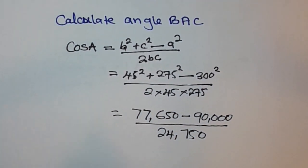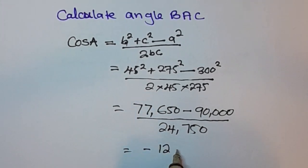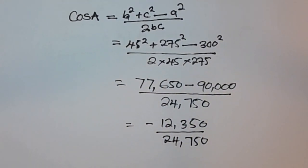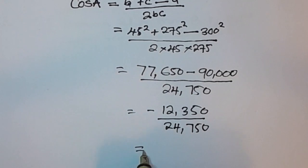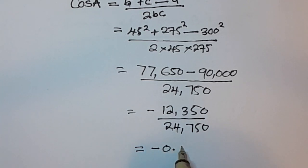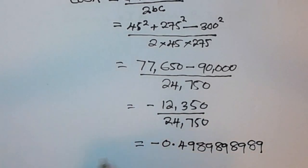When you subtract, you get negative 12,350 divided by 24,750. If you divide this on the calculator you get negative 0.498989.